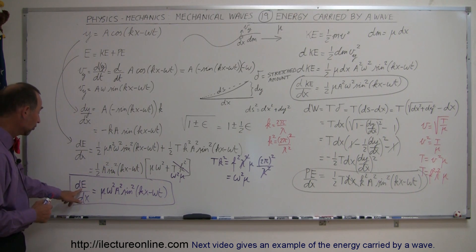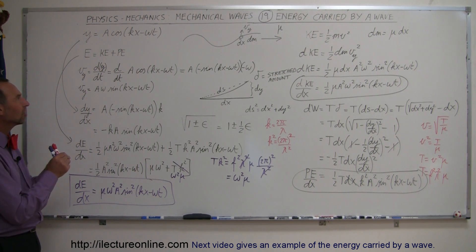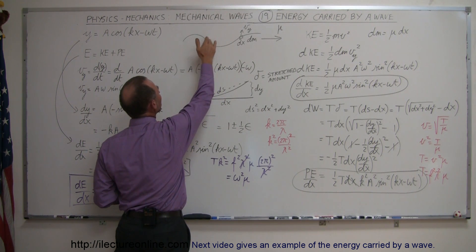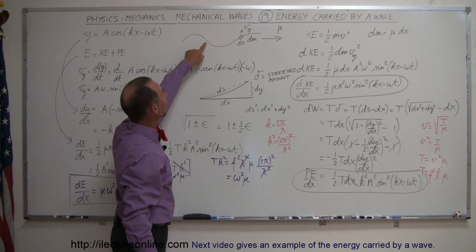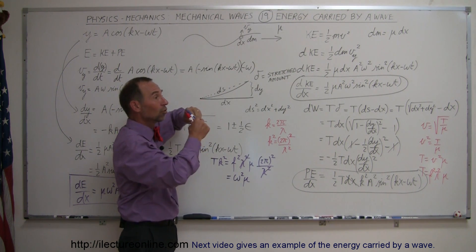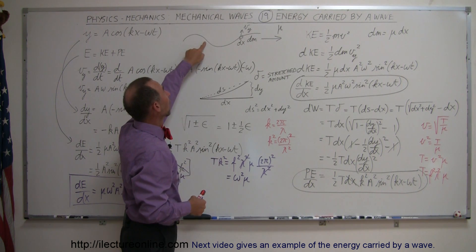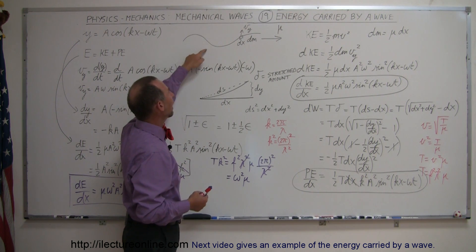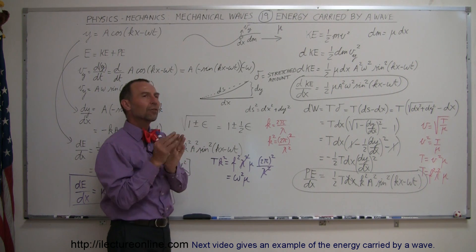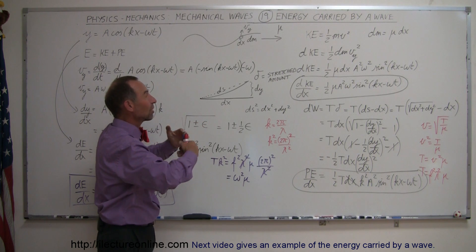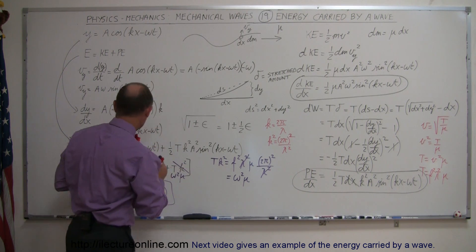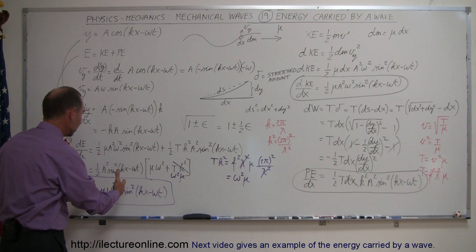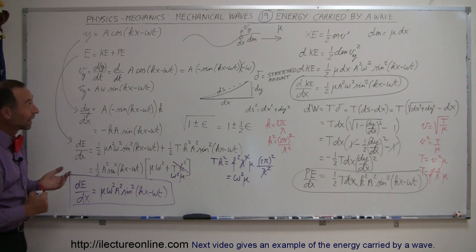Notice this is a function of both position and time — meaning it changes constantly. When the string is at its equilibrium point, there is no potential energy because the string has no additional stretch, but the velocity is at a maximum, so kinetic energy is maximum. At the very top of the string, velocity is zero but the string has maximum stretch, giving maximum potential energy. The energy at any stretch of string is always the sum of potential and kinetic energy, and together they form a single function.